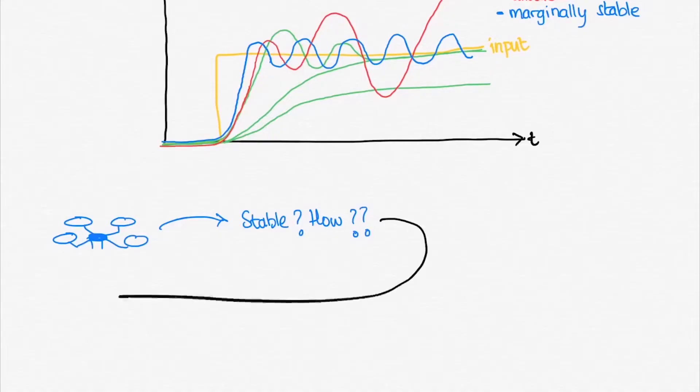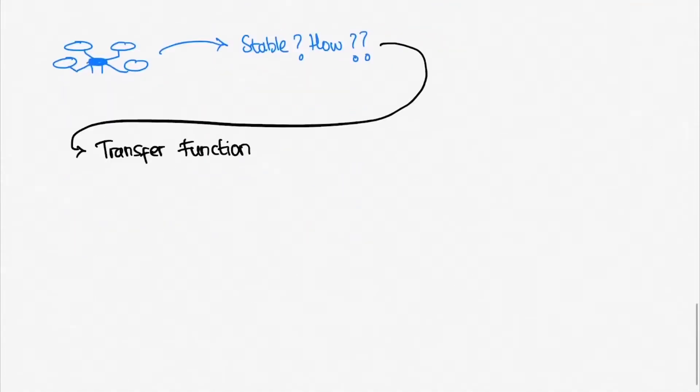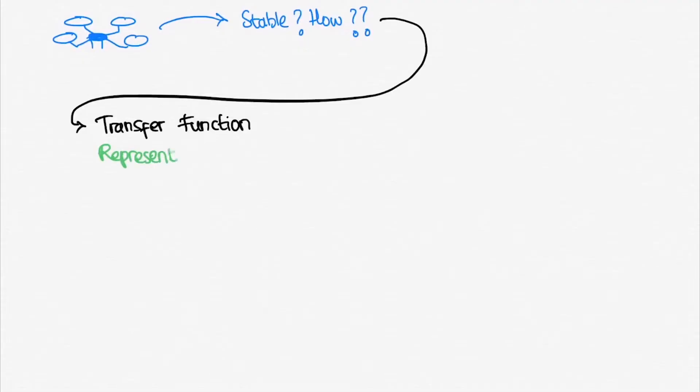We just talked about three types of stability of a system. But how do we determine whether a certain system is stable or not? To answer that question, it is necessary to understand what transfer function is first.